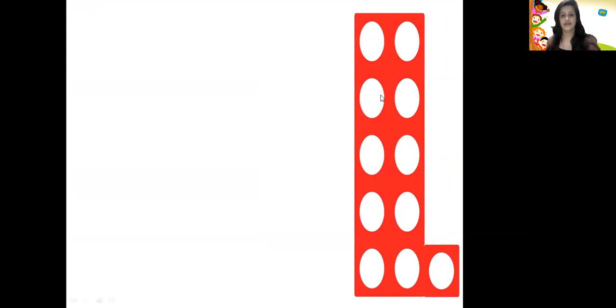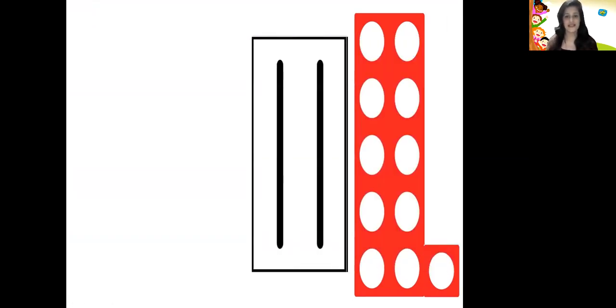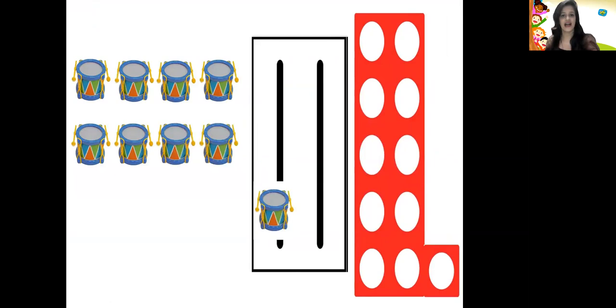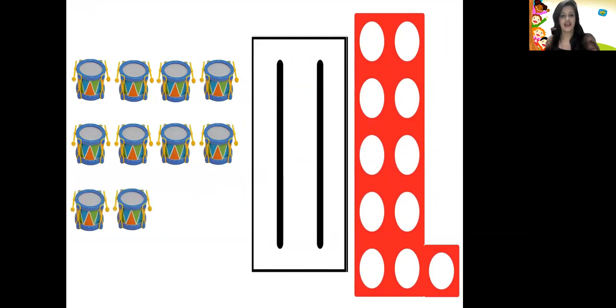Now this pattern tile, children: 1, 2, 3, 4, 5, 6, 7, 8, 9, 10, 11. This number tile is having 11 holes in it, and it's the number pattern tile for number 11. Let us count the objects children: 1, 2, 3, 4, 5, 6, 7, 8, 9, 10, 11. Yes, so these were 11 objects.